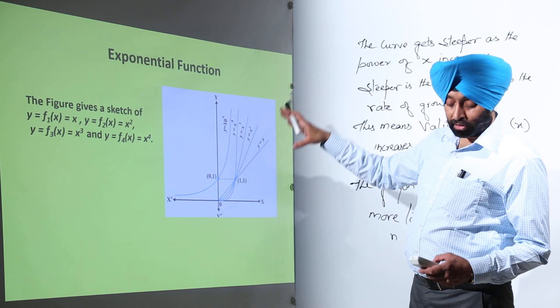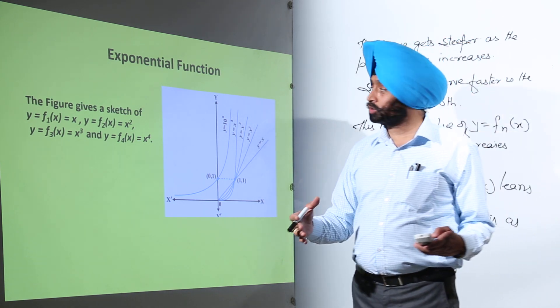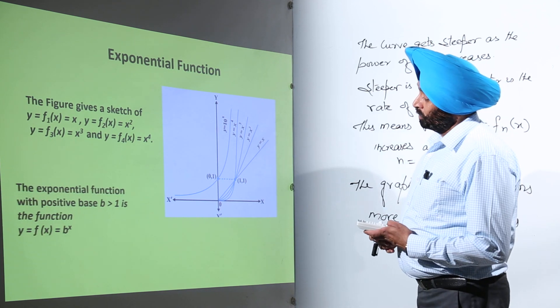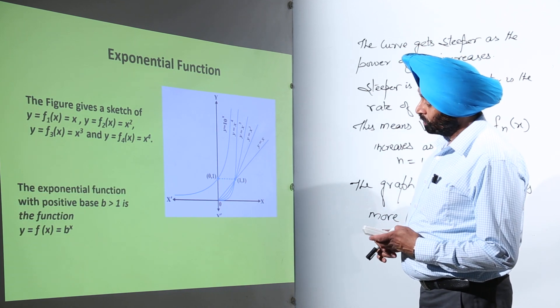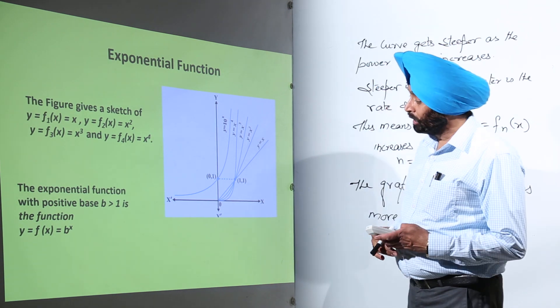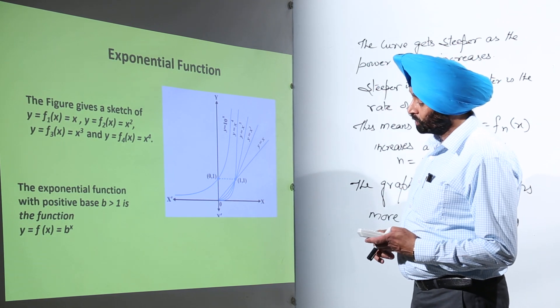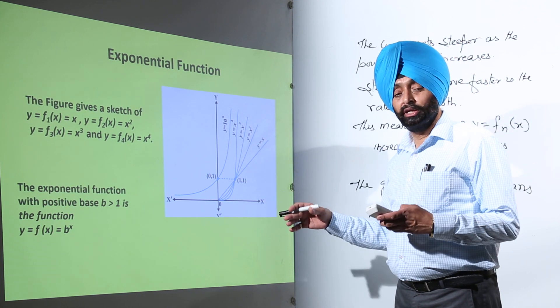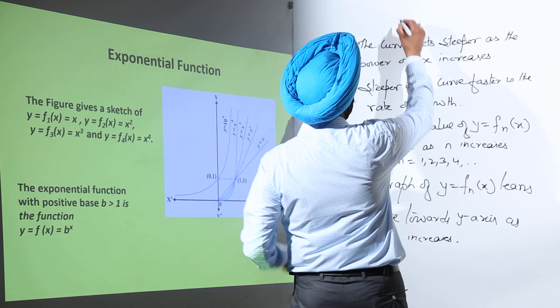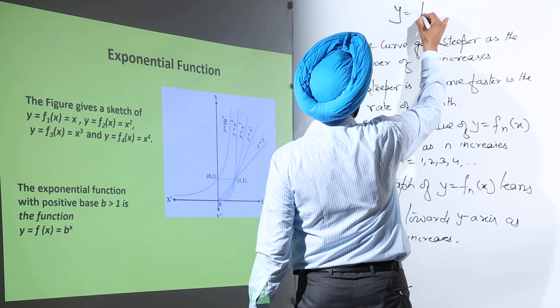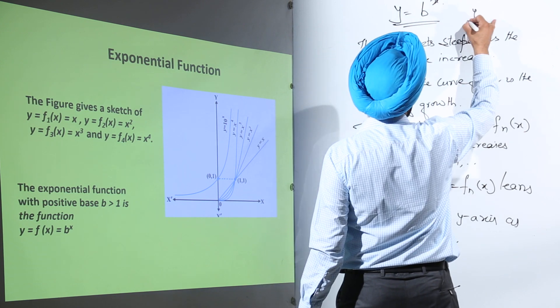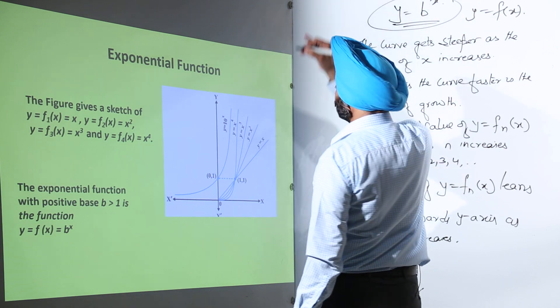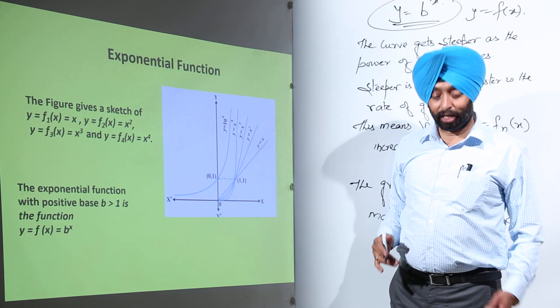So from this part what we are getting? We got the definition for the exponential function, and it is the exponential function with positive base b greater than 1 is the function y equals f(x), and y equals f(x) will be treated as b raised to power x. So we will be writing this as y equals b raised to power x, where y equals f(x). So this is what? This is the exponential form. To this we are saying exponential form.